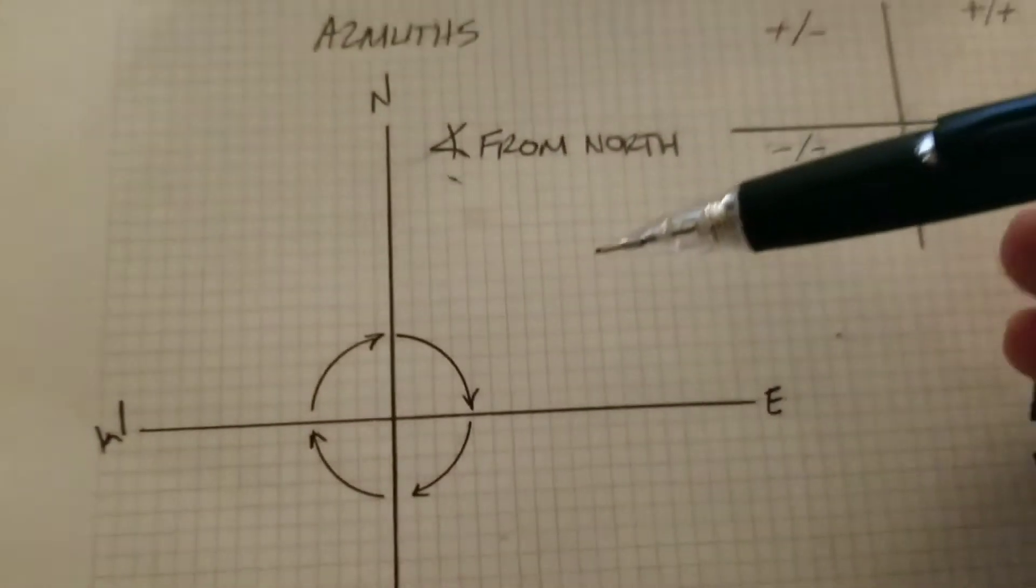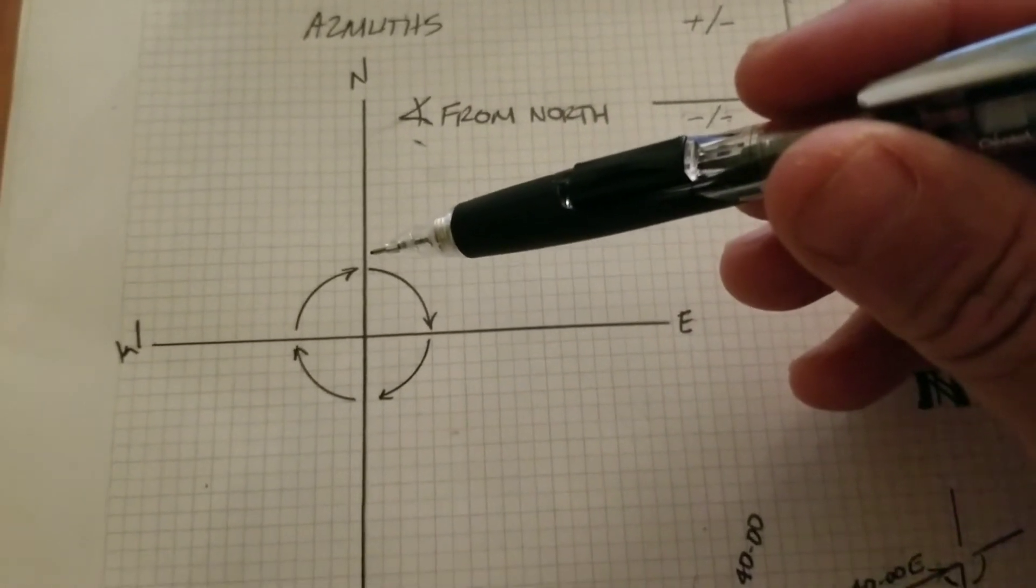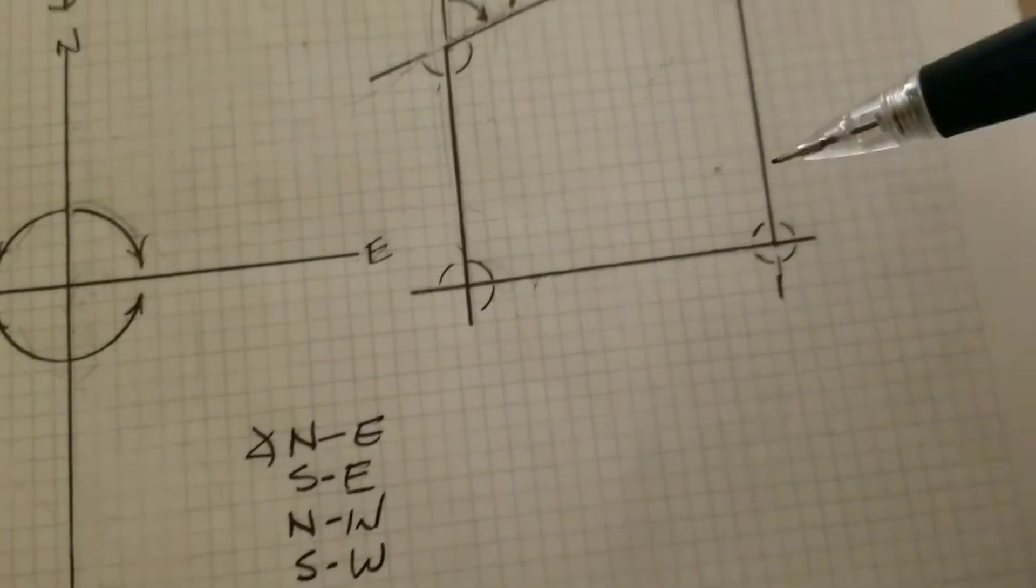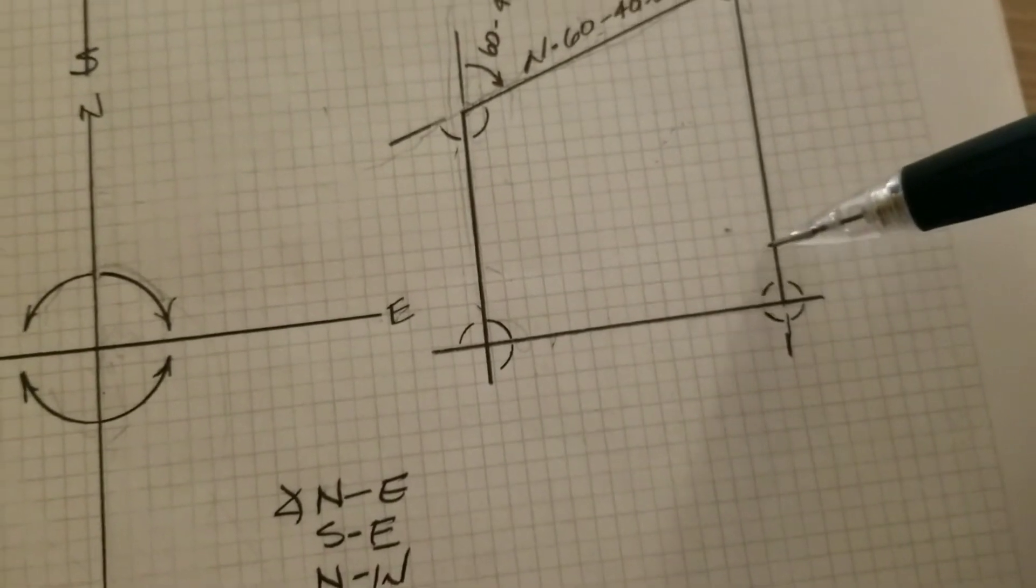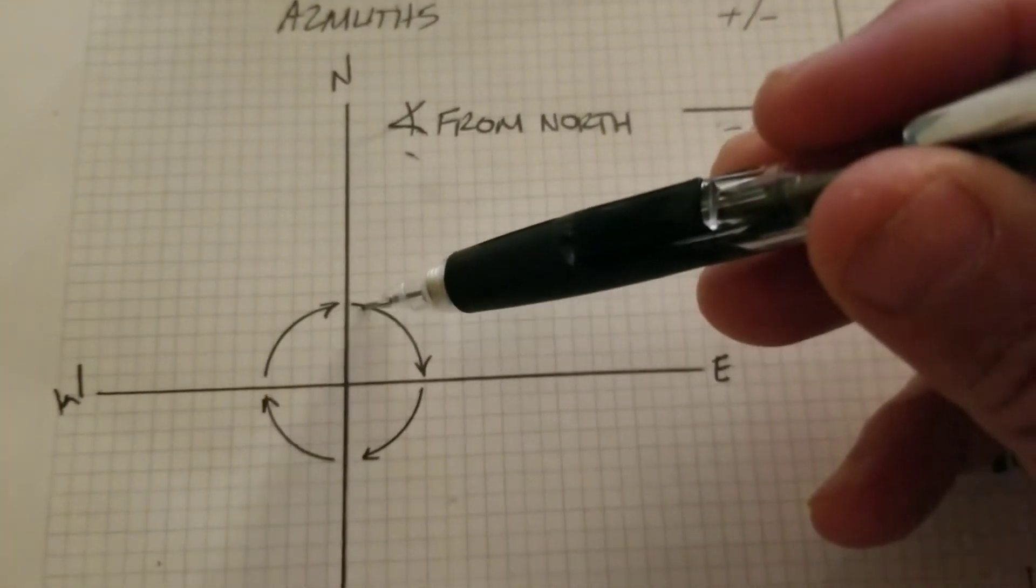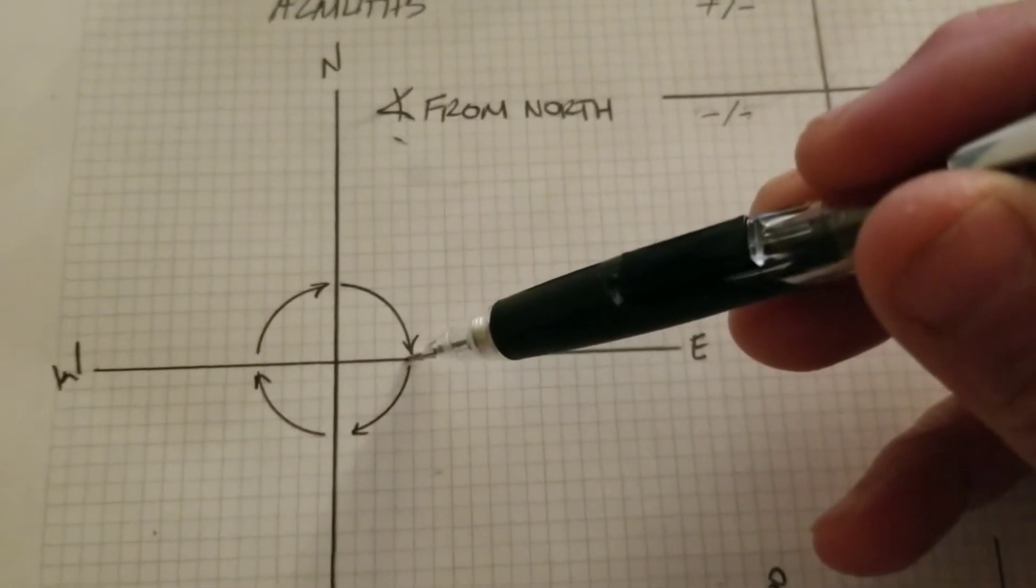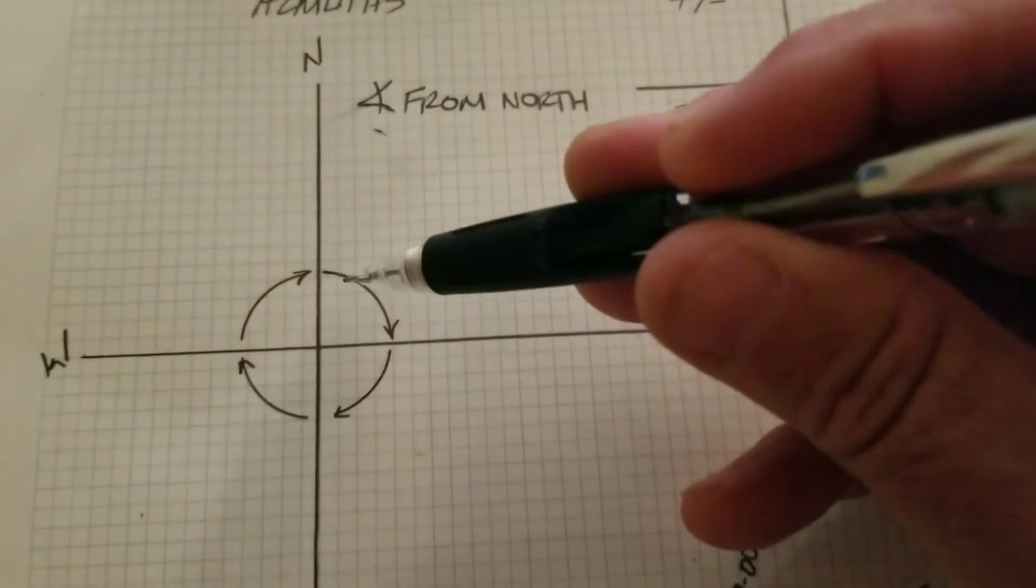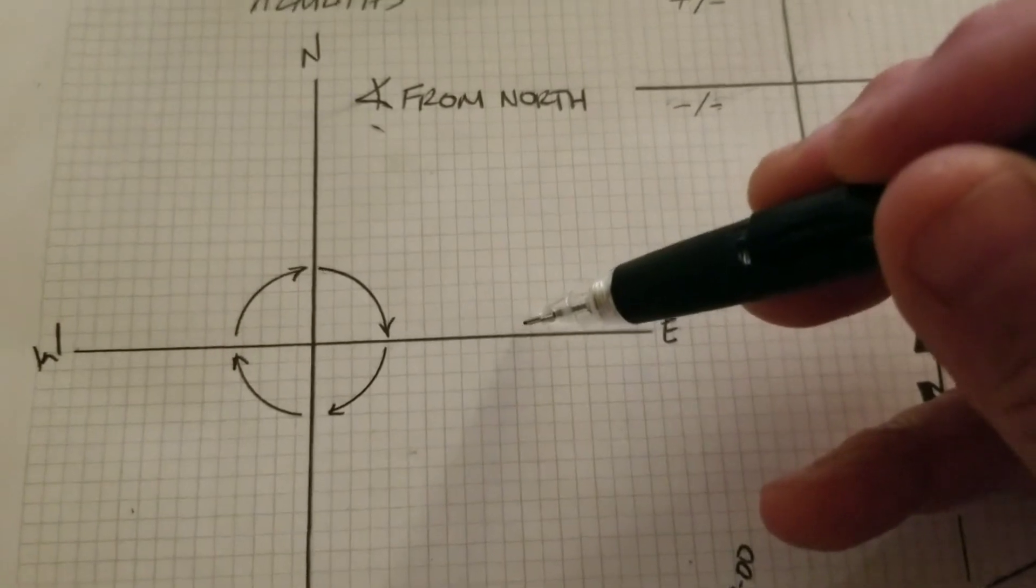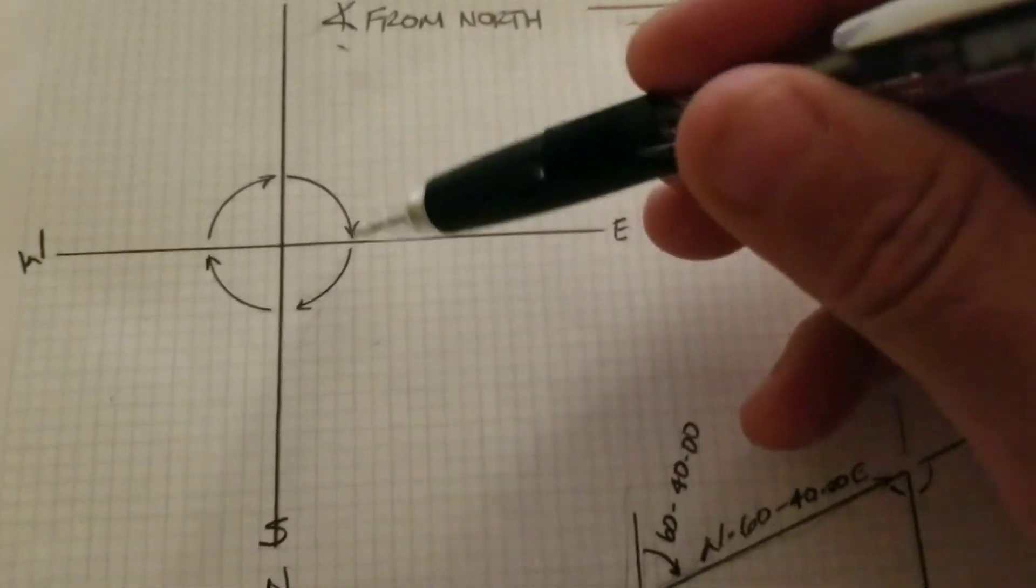But when we turn that angle into an azimuth, its bearing starts at north. So a 90 degree angle, let's say this was 90 degrees right here, a 90 degree angle here is just 90 degrees. A 90 degree azimuth starts from north. So it'd be here at the east line and that would be your 90 degree azimuth.